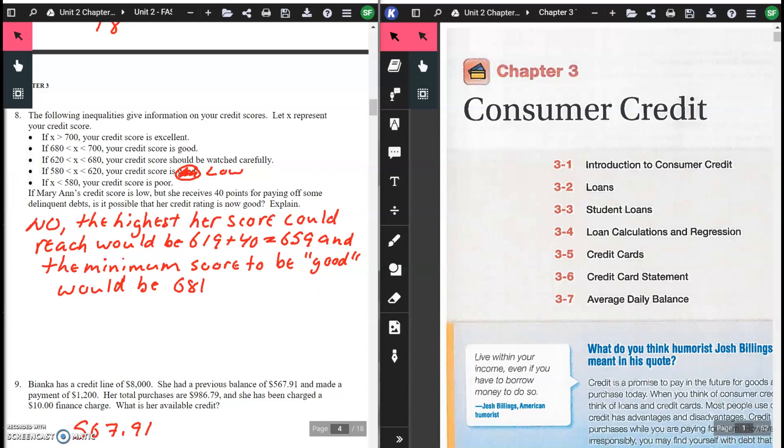Number eight: The following inequality gives information on your credit scores. Let X represent your credit score. Remember your credit score ranges from 300 to 850. Part one says, if X is greater than 700, your score is excellent. Between 680 and 700, your score is good. Between 620 and 680, your score should be watched carefully.